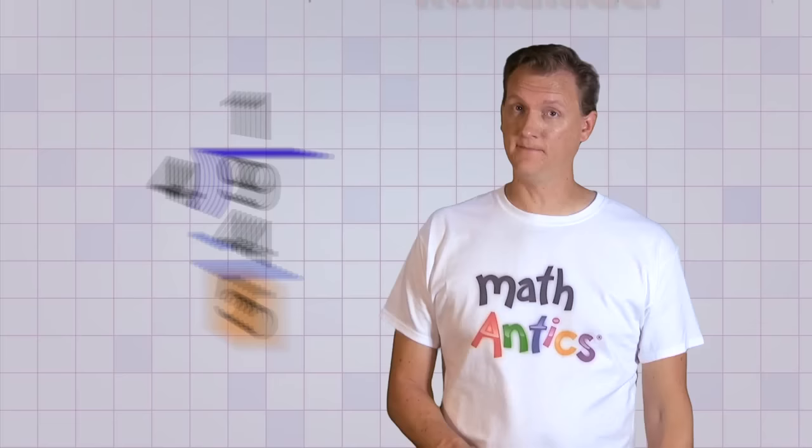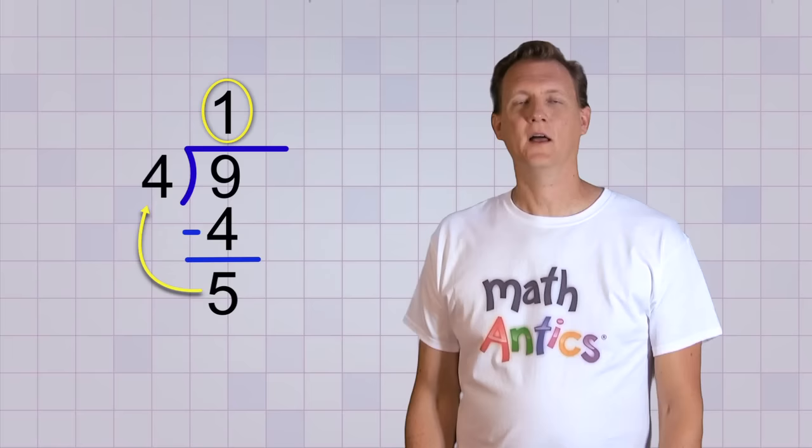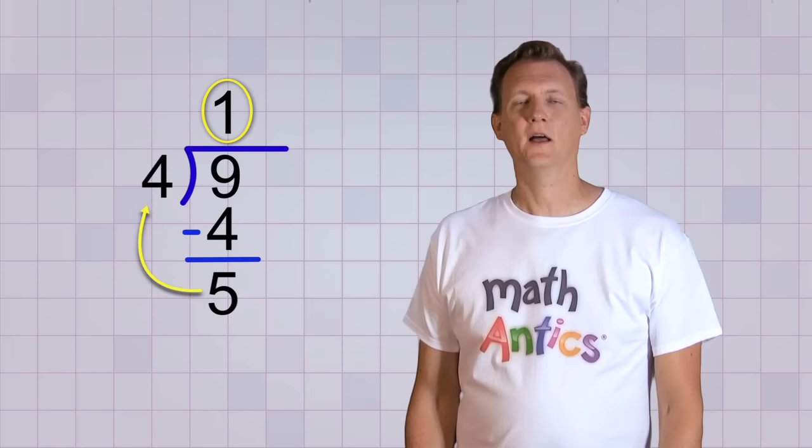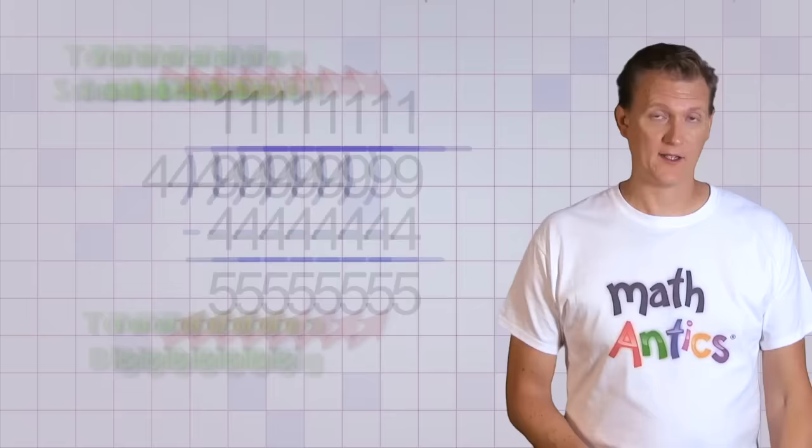And when I do that, I see that 9 minus 4 will give me 5. Hmm, that's a pretty big remainder. In fact, the remainder is bigger than the number I'm dividing by, and that's why this answer is trouble. If the remainder is bigger than the number you're dividing by, it means that you should have picked a bigger answer, because each of the groups you're dividing up into could have gotten more than they did. Your answer was too small, and so the remainder was too big.